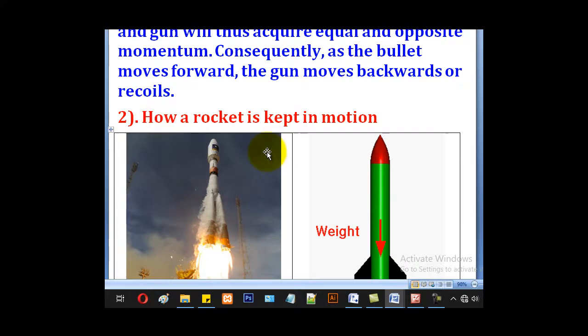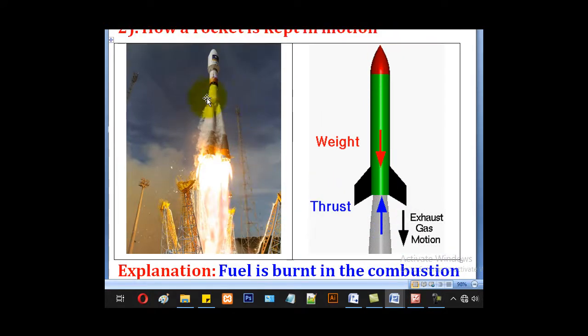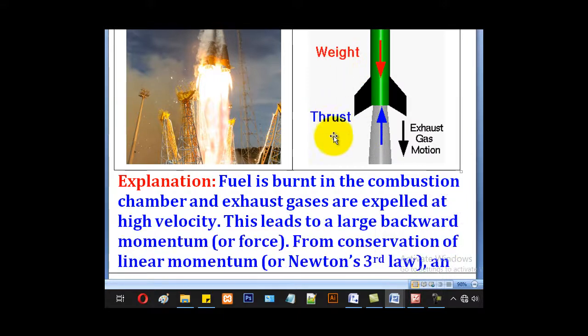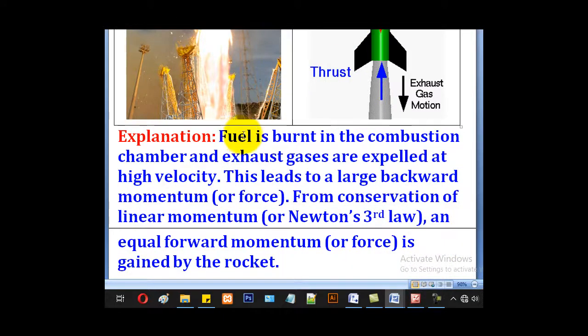The principle can also be used to explain how the rocket is kept in motion. So this is a picture of a rocket in motion. There will be exhaust gas in motion, and also a thrust, and also the weight. So the fuel is burnt in the combustion chamber, and exhaust gases are expelled at high velocities.